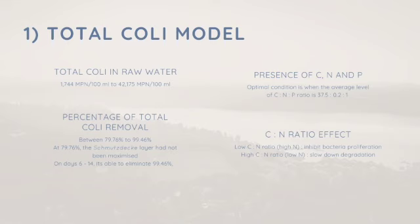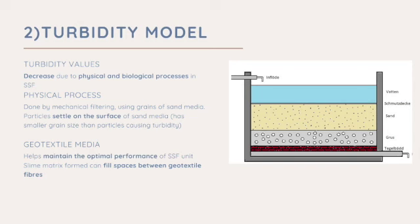Next, the turbidity model. Turbidity values decrease due to physical and biological processes in slow sand filter. The physical process is done by mechanical filtering using grains of sand media, where particles settle on the surface of sand media which has smaller grain size than particles causing turbidity. The geotextile media helps to maintain the optimal performance of slow sand filter unit, where the slimy matrix form can fill spaces between geotextile fibers on the surface of the sand filter.